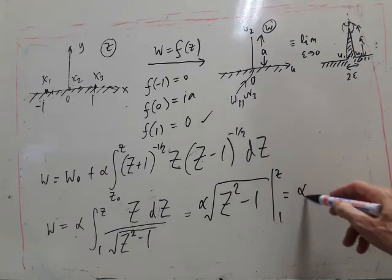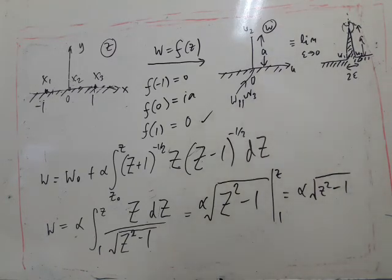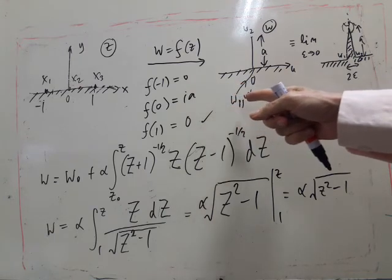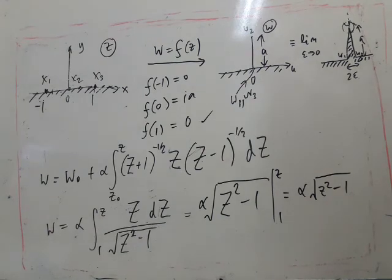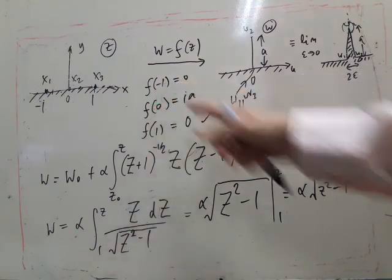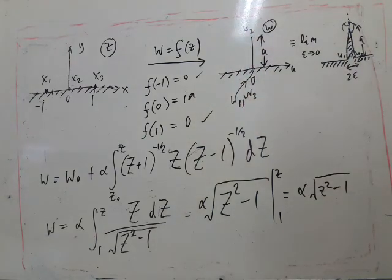And it's evaluated at little z and 1, which just gives us alpha times little z minus 1. So to determine alpha, we use the thing we haven't used yet. It looks like we haven't used this one either, but we can always check that this works out. But notice that when z is minus 1, this will also give us 0. So, in effect, we've used that one already.